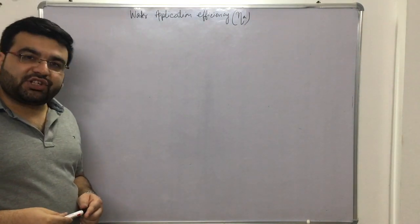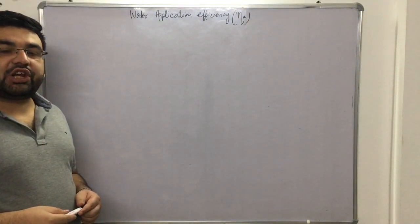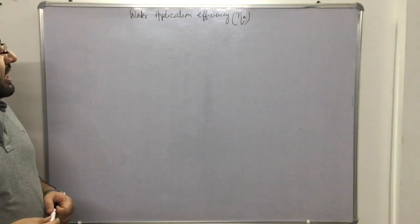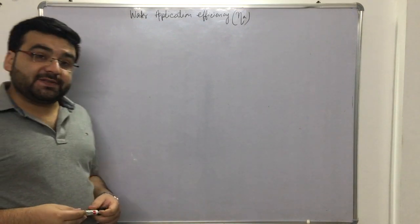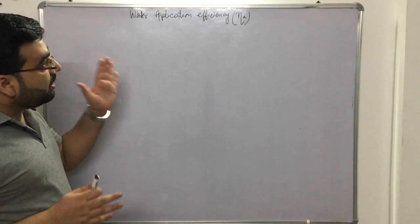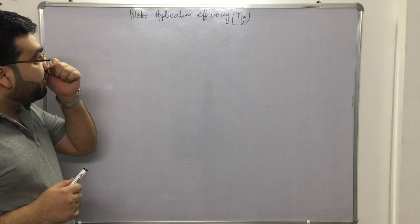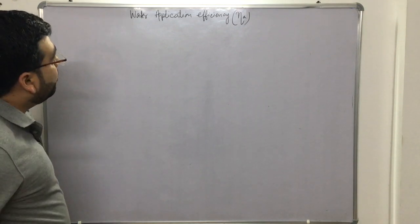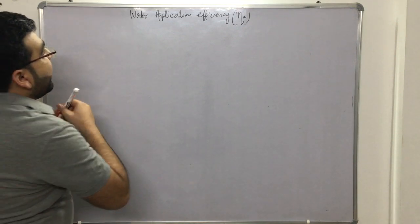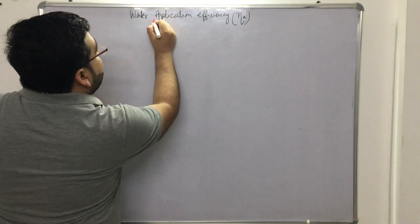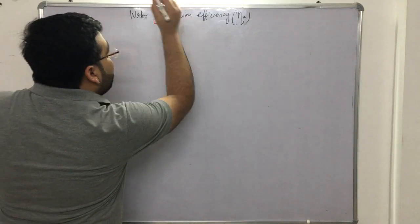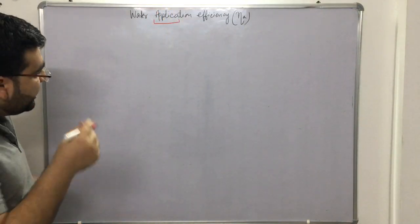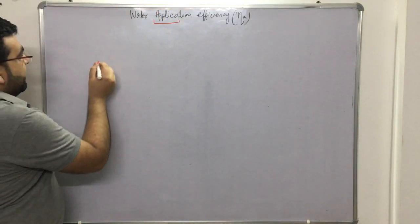In irrigation engineering, under the chapter on irrigation efficiencies, we are now looking at the topic of water application efficiency. From the name itself, we have to apply water to a field, so let me give an example.